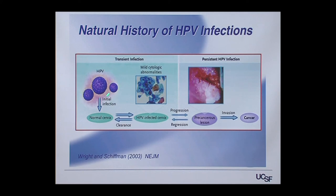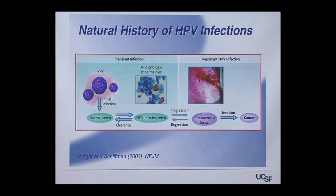HPV, or human papillomavirus, is transmitted through sexual activity. An active HPV infection on the penis or scrotum can transmit to the woman and arrive at the cervix, causing an HPV-infected cervix that sheds cells detected on a pap test. Most of the time — 80% to 90% — this infection will self-clear within two years in recently exposed women.